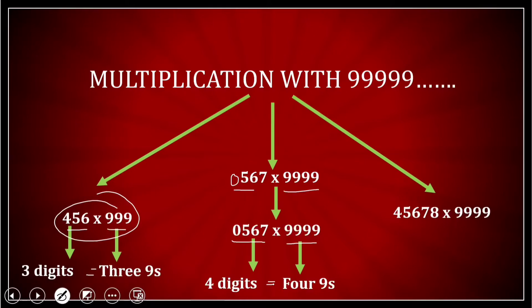But if you see here, the third case, the third case is what? I have 1, 2, 3, 4, 5 digits over here, whereas I have 1, 2, 3, 4 9s over here.